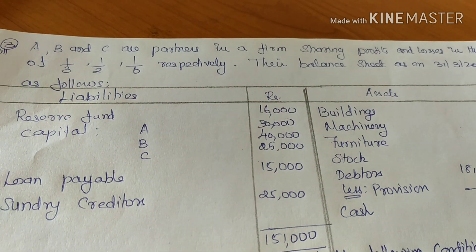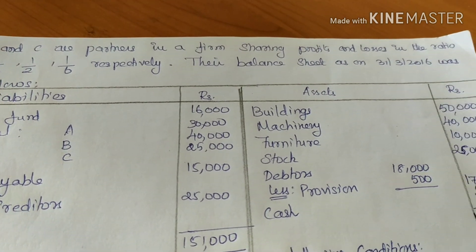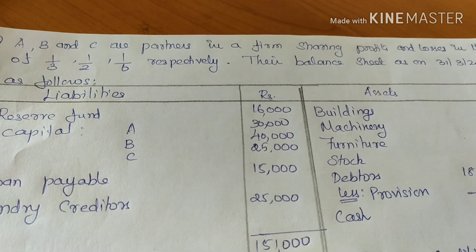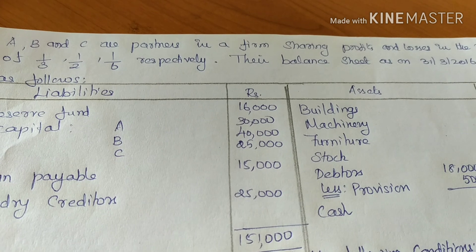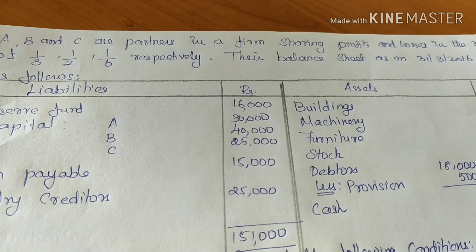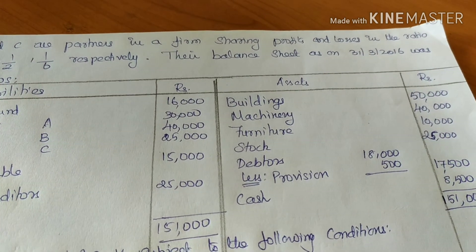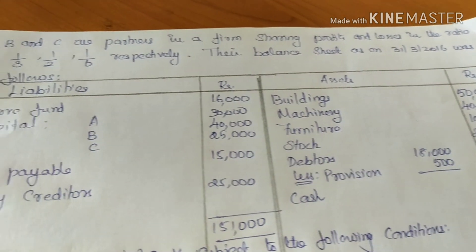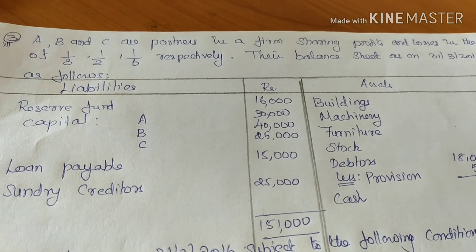B and G are partners in a firm sharing profits and losses in the ratio of 1/3, 1/2, and 1/6 respectively. The balance sheet as on 31st March 2016 was as follows.